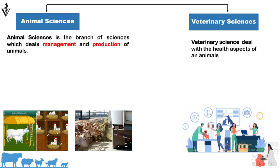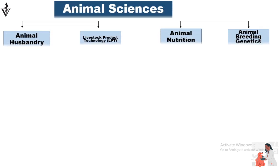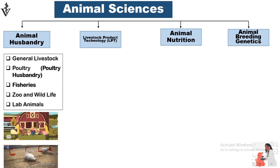Animal sciences is subdivided into four branches: number one, animal husbandry; number two, livestock product technology; number three, animal nutrition; and number four, animal breeding and genetics. Animal husbandry is a science which deals with the breeding, farming, management, and care of animals.